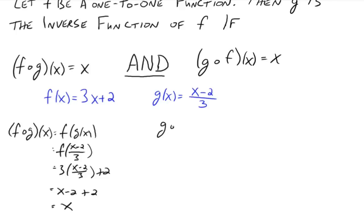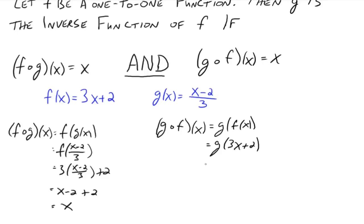Also, g composed with f of x has to go down to x. So we look at g of 3x plus 2 — take 3x plus 2 and plug it in for x. You get 3x plus 2 minus 2, all over 3, which goes to 3x over 3, which just goes to x. So because both compositions take you down to the identity function x, f and g are inverses of each other. That's the formal definition.